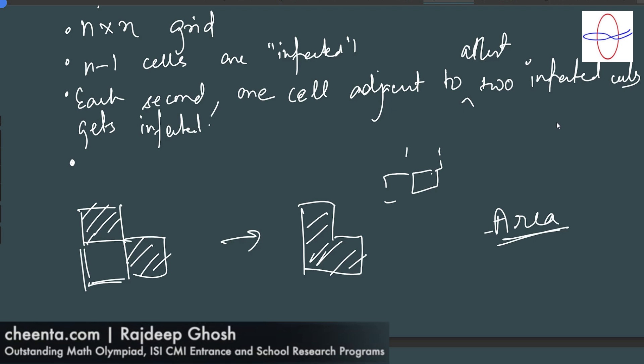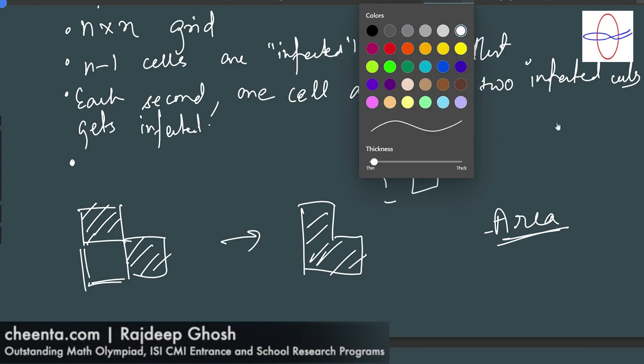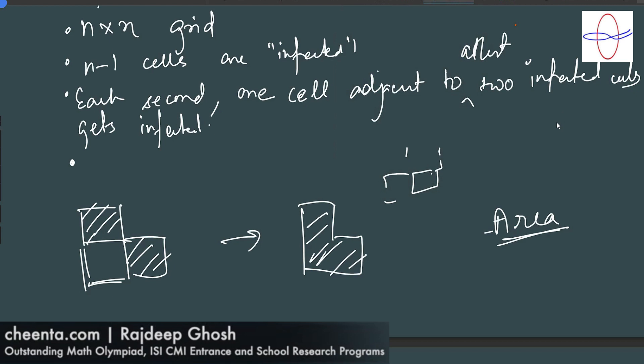So you could say, okay, so that's a nice monovariant. Well, the issue is that it's not a very useful one. Obviously, the area has to increase infecting new cells. It's not a very useful monovariant. It doesn't give us much. The perimeter on the other hand, that's a nice monovariant because it gives us new information. Look at what happened to the perimeter.